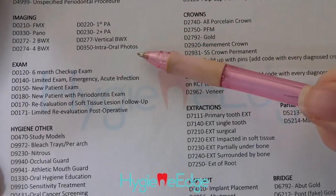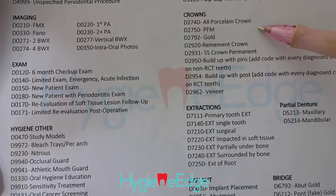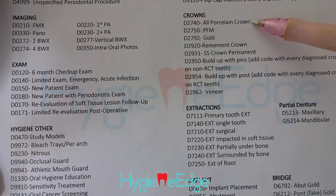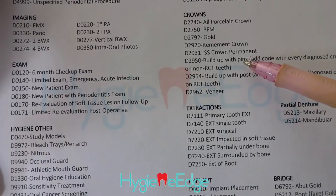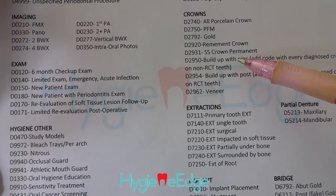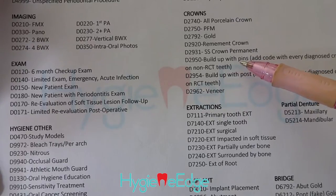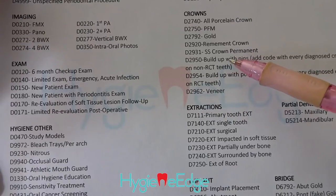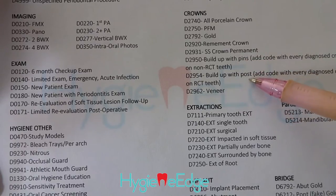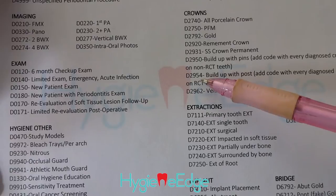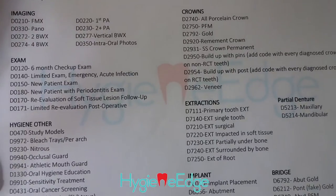Over on the right you can see the crown codes. One thing hygienists often don't know is to always put a build-up with the crown. If the tooth has not had a root canal, you'll want to do the build-up with pins code. If it has had a root canal, usually they'll have to put a post in for more support, and that's where you'll use the 2954 code.